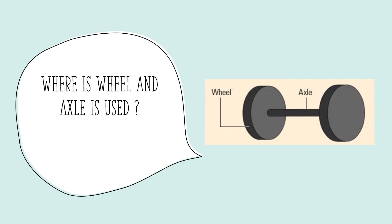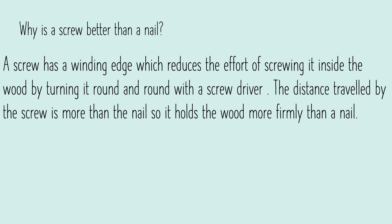Here is an important question: why is a screw better than a nail? A screw has a winding edge which reduces the effort of screwing it inside the wood by turning it round and round with a screwdriver. The distance travelled by the screw is more than the nail, so it holds the wood more firmly than a nail.